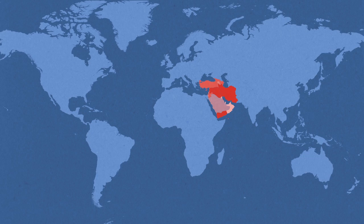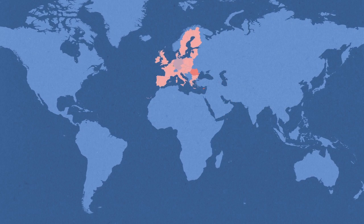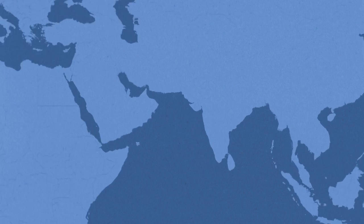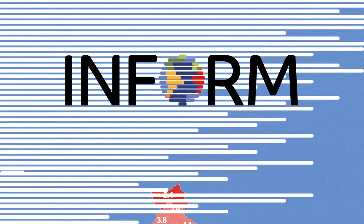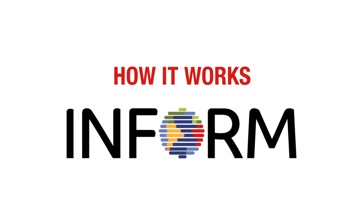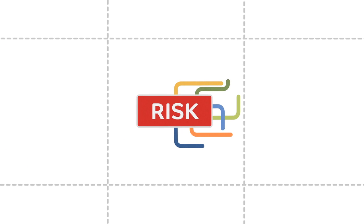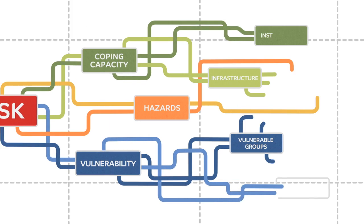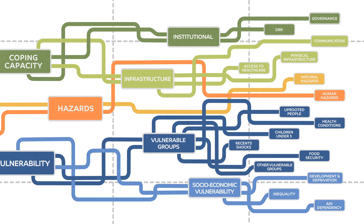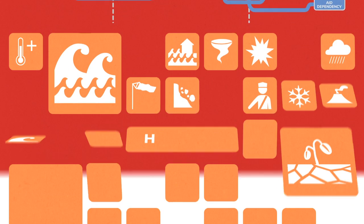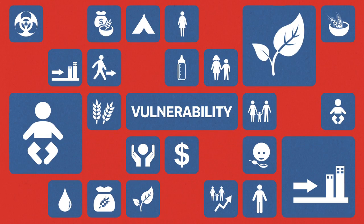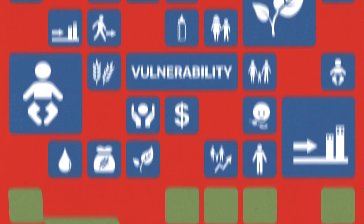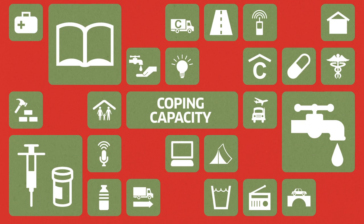INFORM can be adapted for your organization or region, and the same methodology can be used for national and regional risk assessment. INFORM simplifies a lot of information about risk. It uses 50 different indicators to measure hazards and people's exposure to them — including all the main types of natural and human hazards — vulnerability, and the resources available to help people cope.